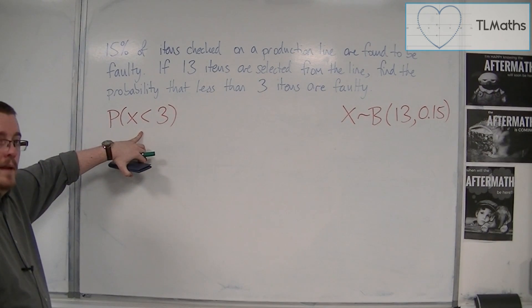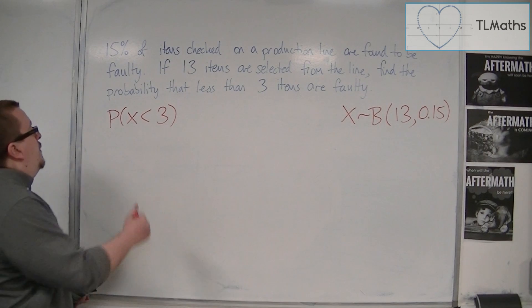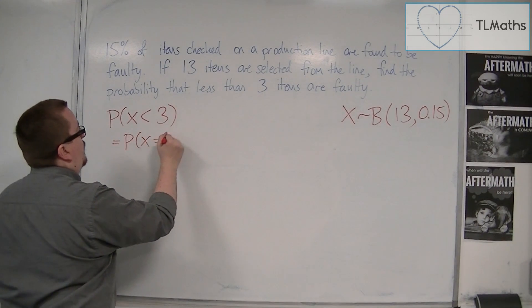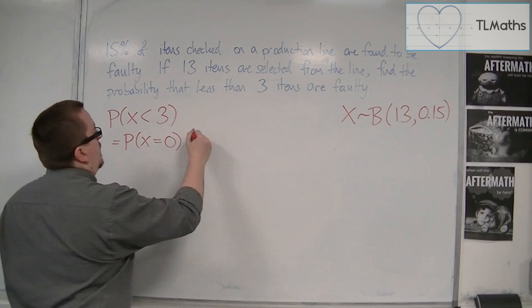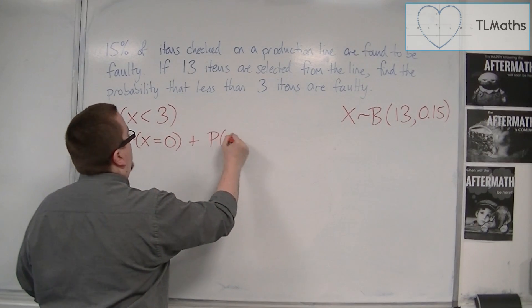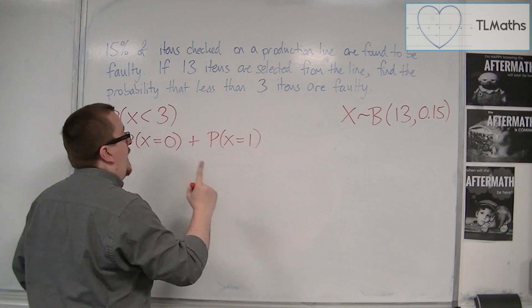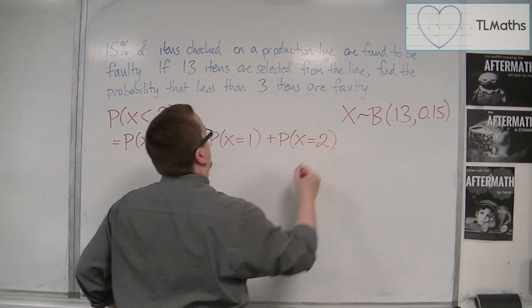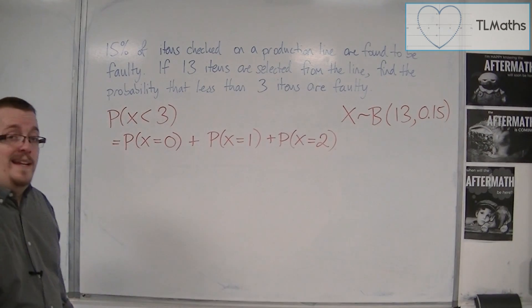We want to find that probability. So that is the same as saying I want to find the probability of X being equal to 0 plus the probability of X being equal to 1, and also the probability of X being equal to 2, because I want strictly less than 3.